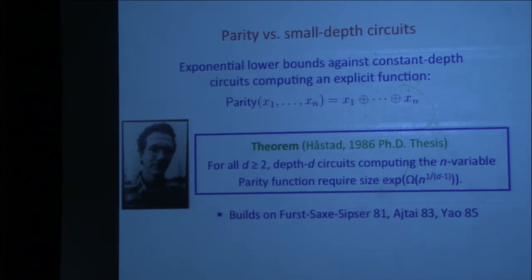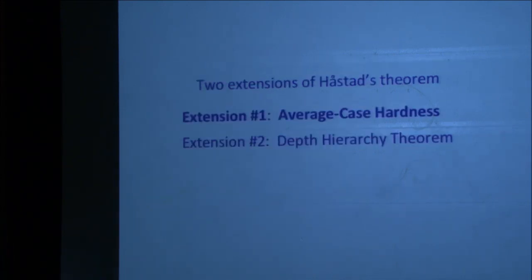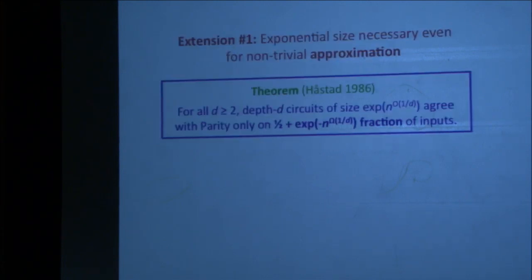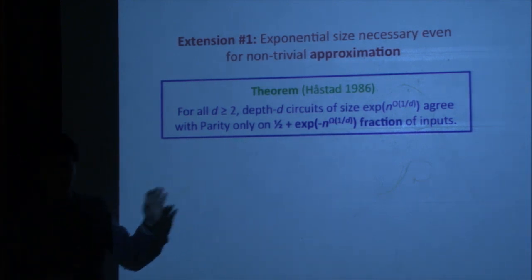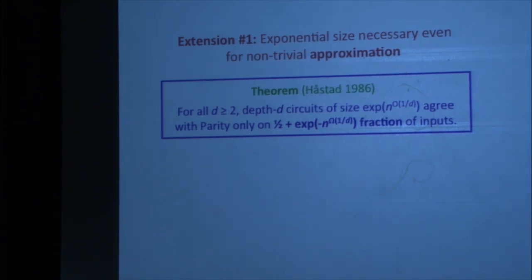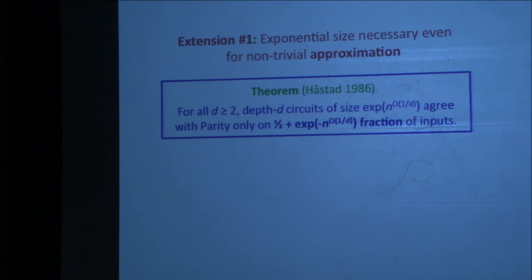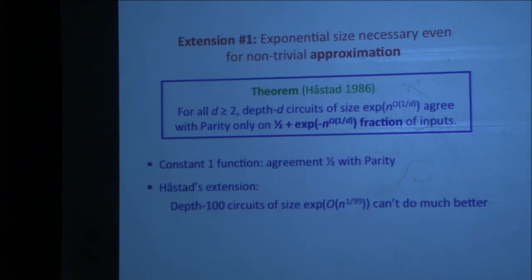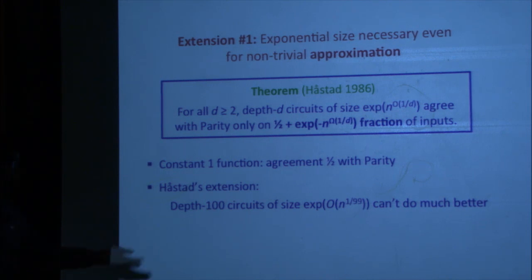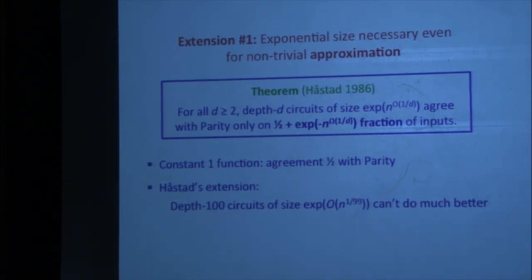Let's move on to two extensions. The first is average case hardness. You need exponential size not just to compute parity, but in fact to even approximate parity. Hastad showed in his thesis that depth-d circuits of roughly the same size, 2 to the n to the 1 over d, not only cannot compute parity, but the agreement with parity is at most half plus an exponentially small quantity when d is a constant. So not only can you not get 100% accuracy, you cannot even get 51% accuracy.